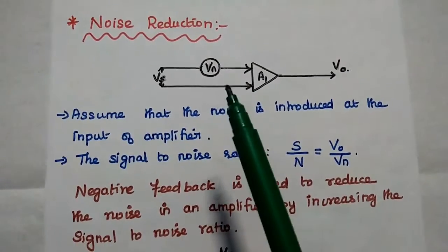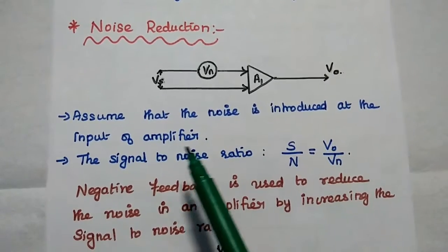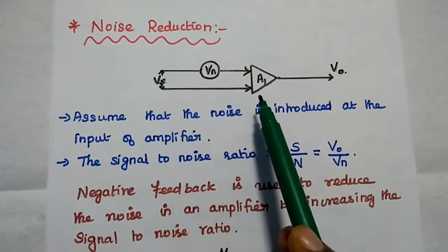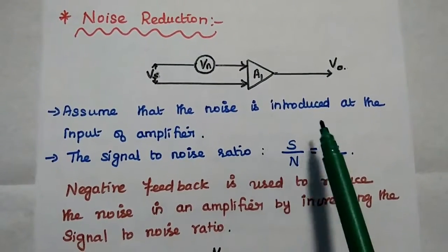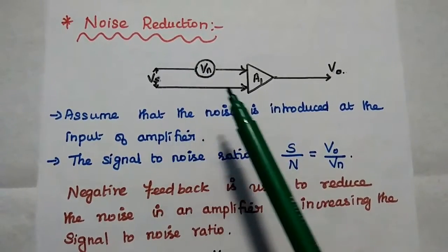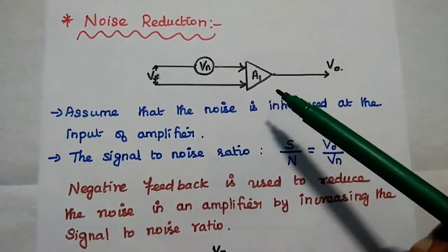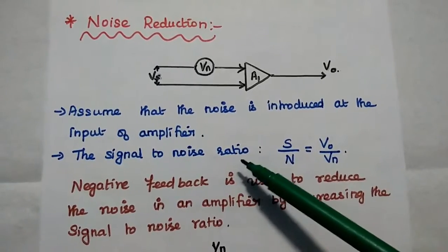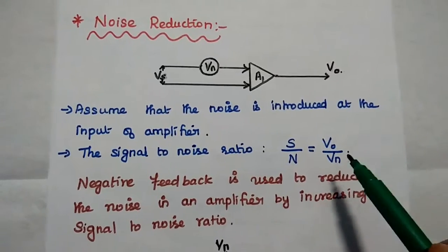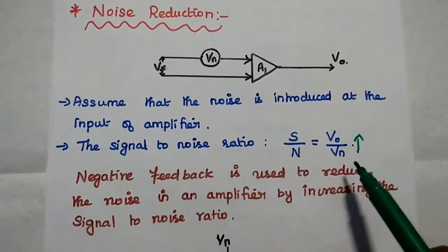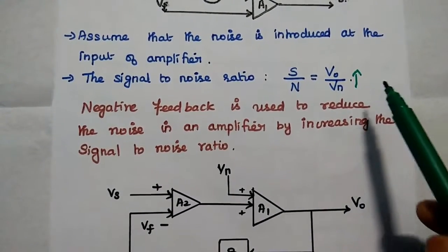The next property is noise reduction. Consider an amplifier circuit without feedback where noise is introduced at the input. Vs is the source input signal, V0 is the amplified output, A1 is the gain, and Vn is the noise signal. The signal-to-noise ratio is S/N equals V0 divided by Vn, and it should always be greater for better amplifier performance. Negative feedback reduces noise by increasing the signal-to-noise ratio.